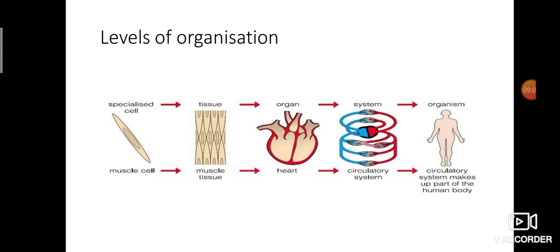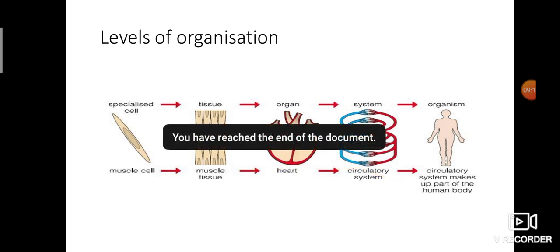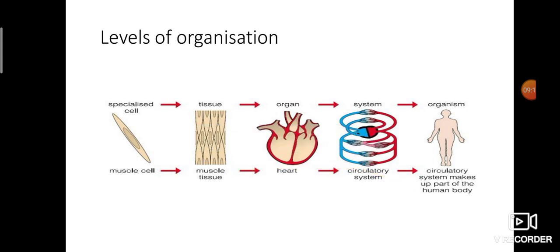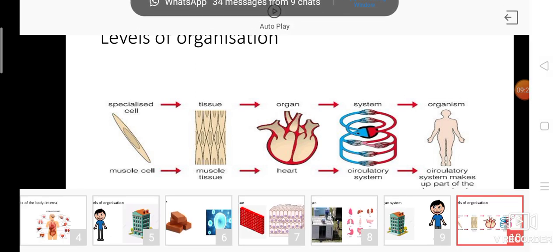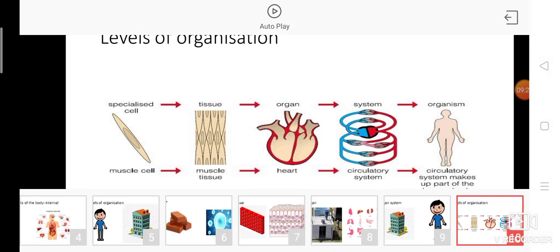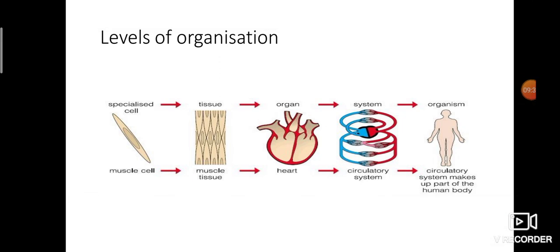So, to summarize the levels of organization: cells join to form tissues; tissues join together to form organs; organs join together to form organ systems; and all the organ systems in our body constitute the human body. I hope you have understood. Watch the video again and learn the terms thoroughly — cell, tissue, organ, organ system. I have also given a link to one more video; watch it and learn the terms. Thank you, we will see in the next class!